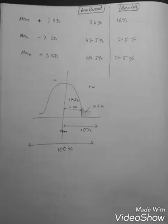What I told you is for both sides. Now if I consider only one side, then mean plus 1 standard deviation is 32 by 2, that is 16%. Mean plus 2 standard deviation is 5 by 2, that is 2.5%. Mean plus 3 standard deviation is 1 by 2, that is 0.5%.